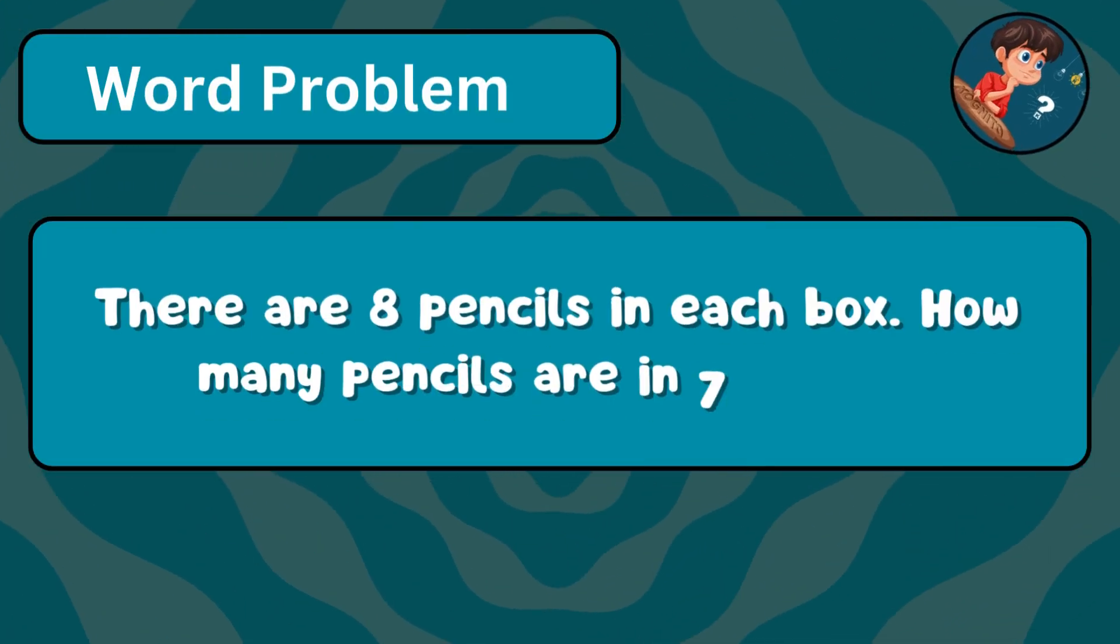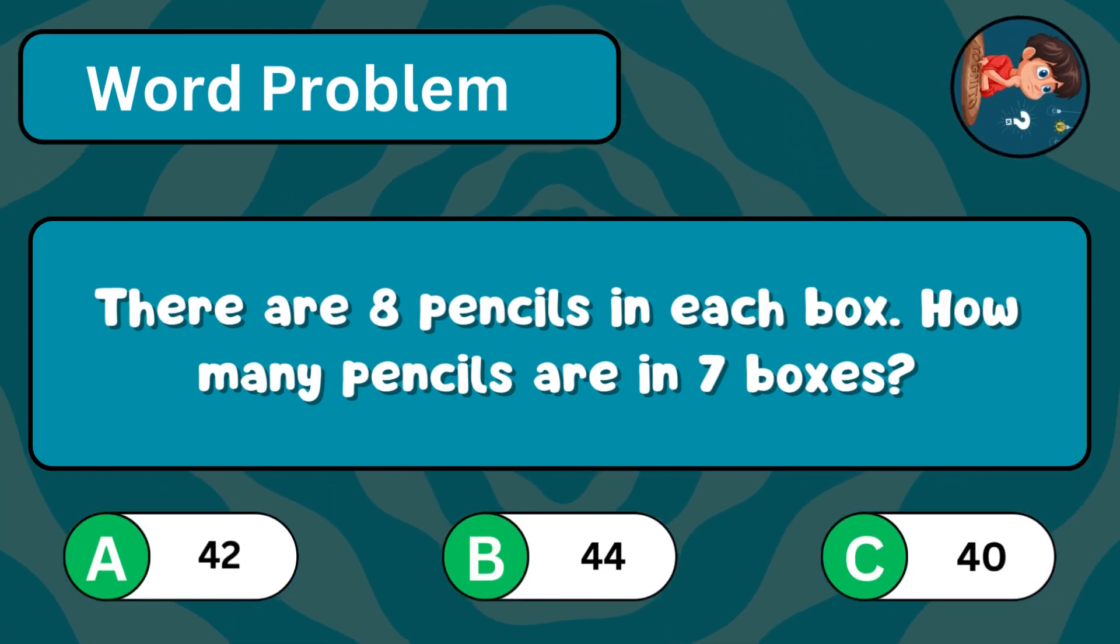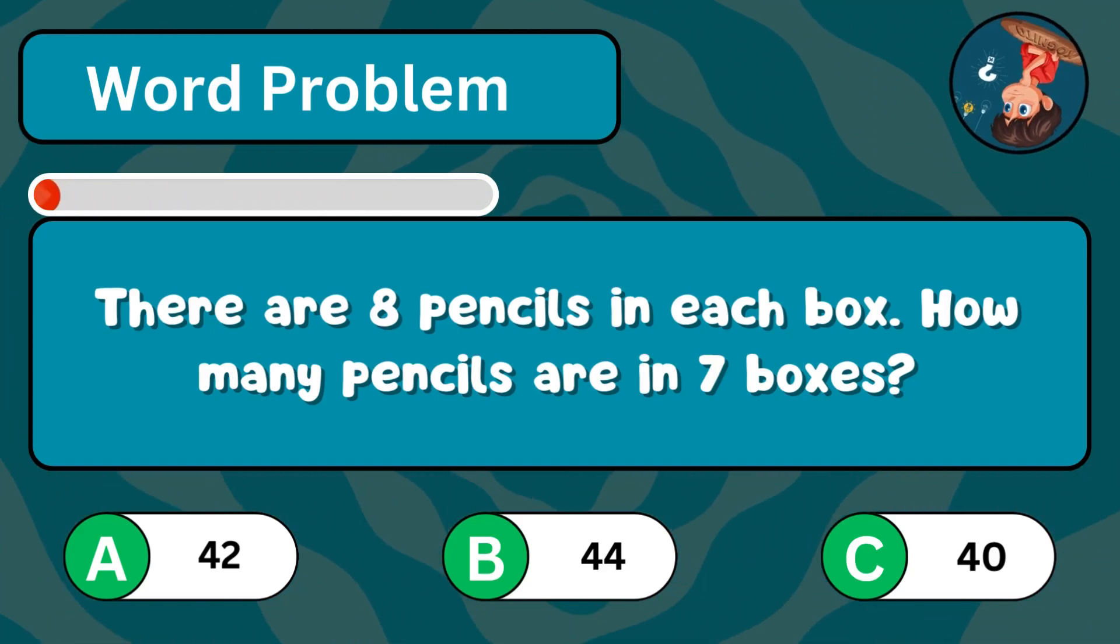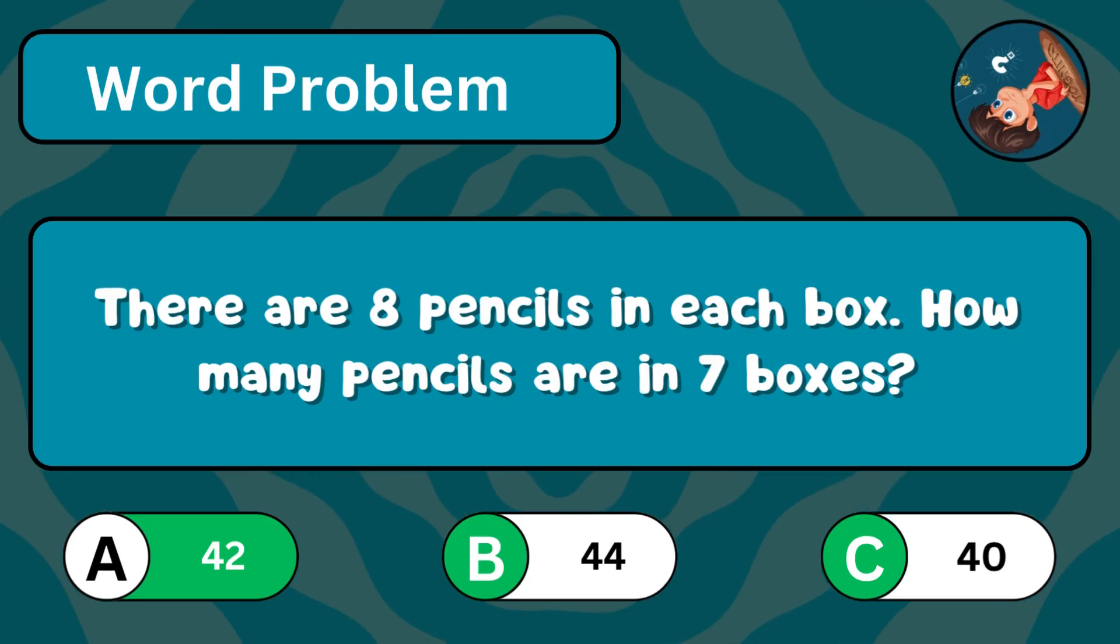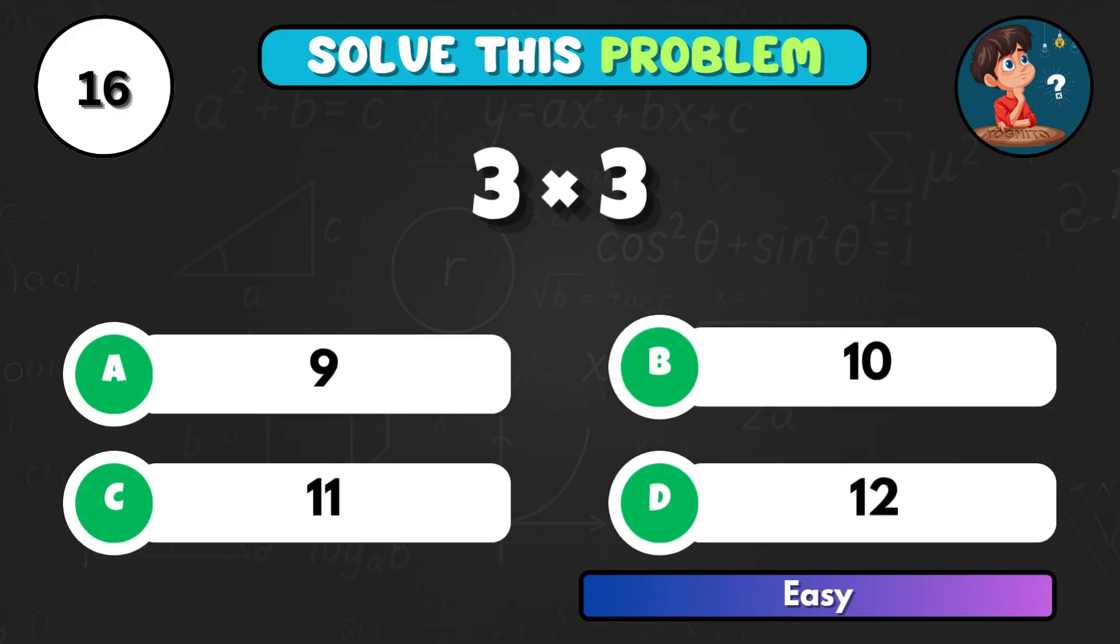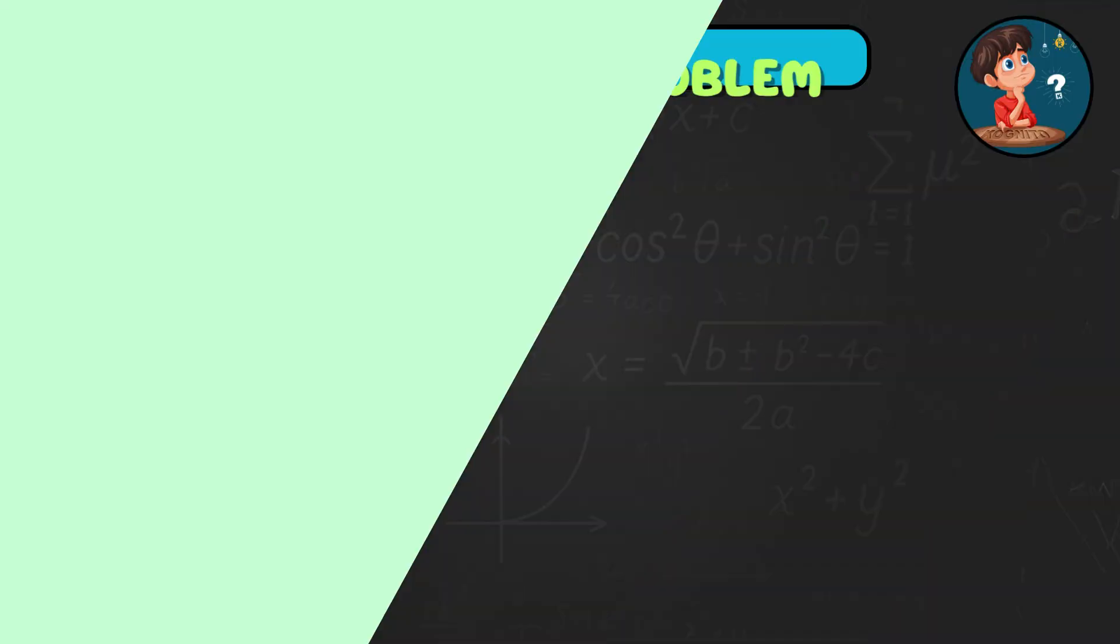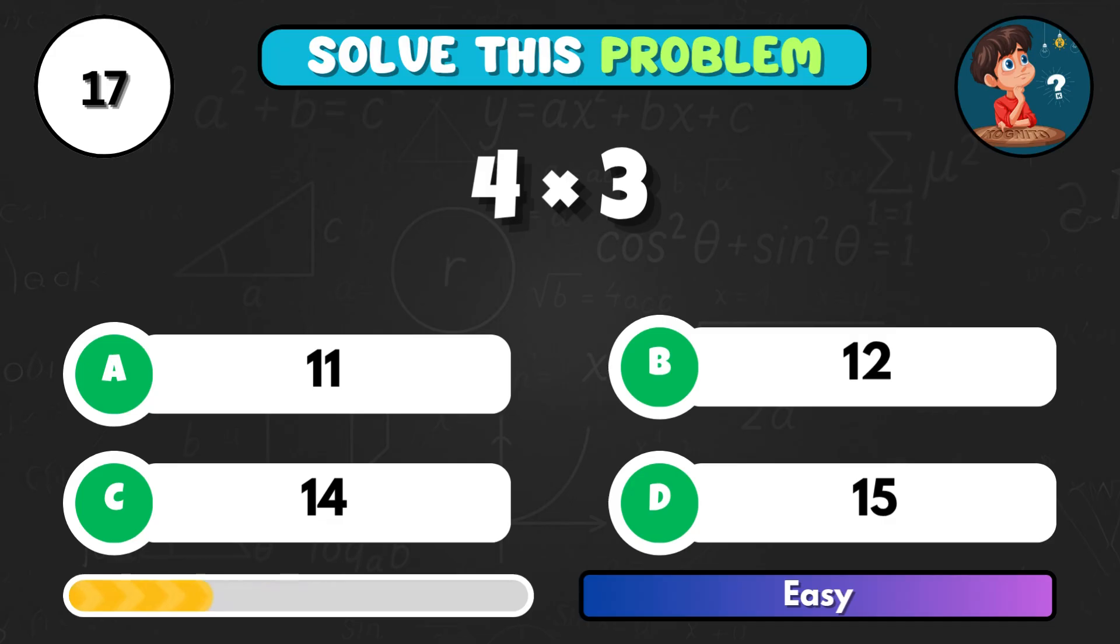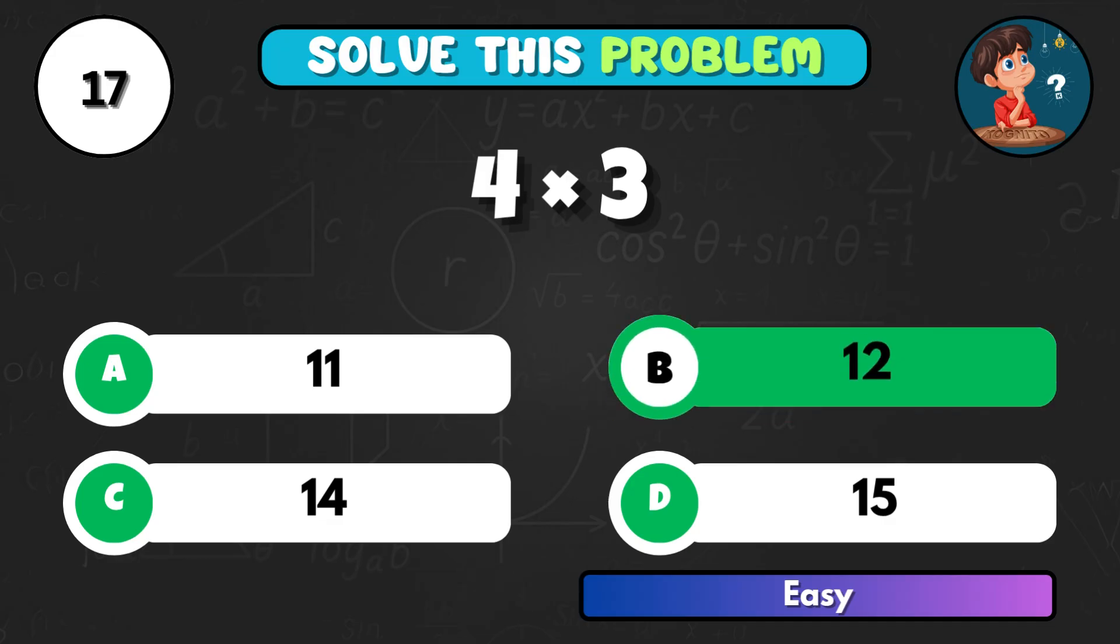There are 8 pencils in each box. If there are 7 boxes, how many pencils are there in total? 3 times 3, what's that? Option A equals 9. 4 times 3, can you solve it? Correct answer B, giving 12.